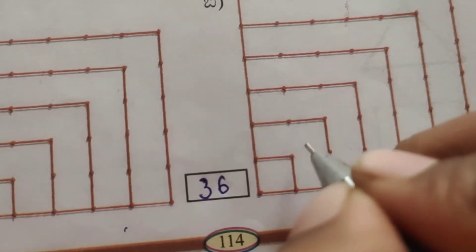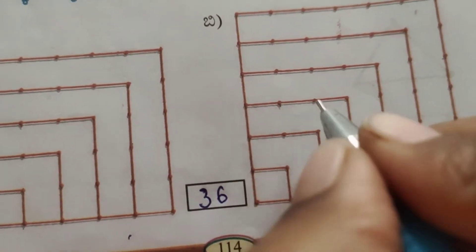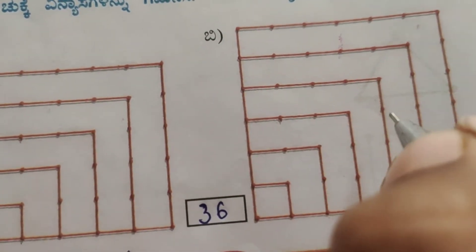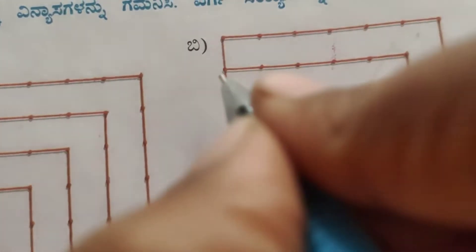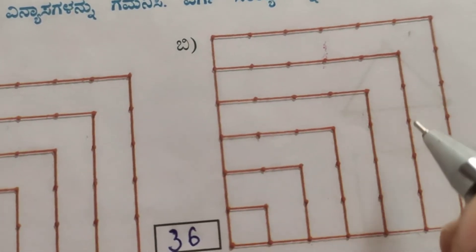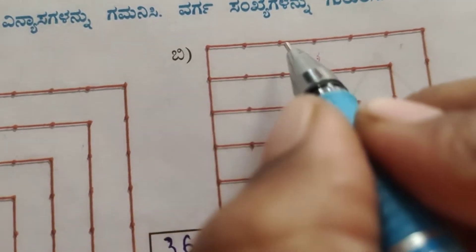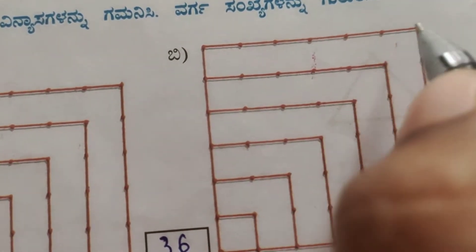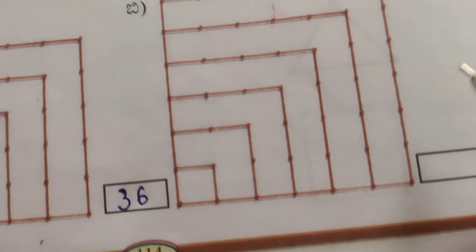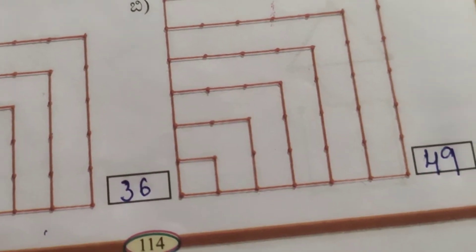Counting the next figure's dots: 4, 5, 6... continuing up to 46, then checking — so write 49 in this box.